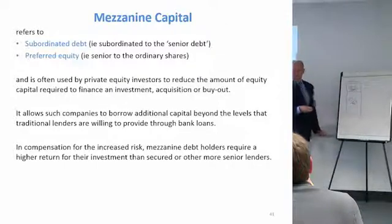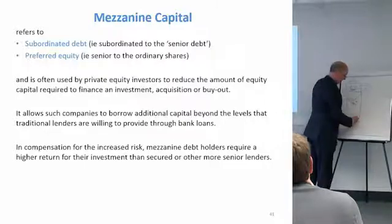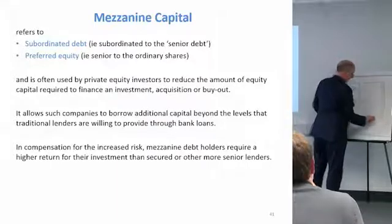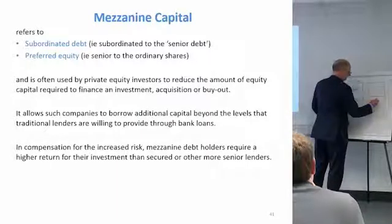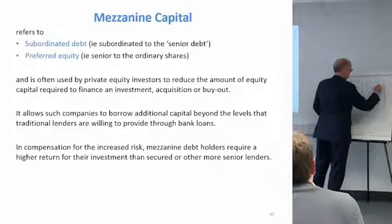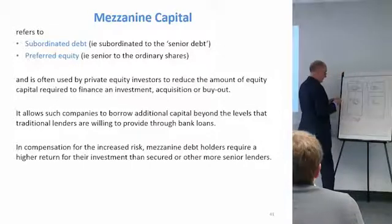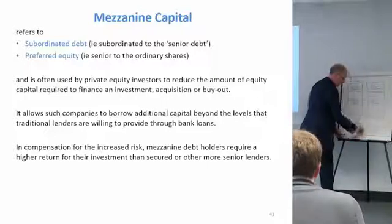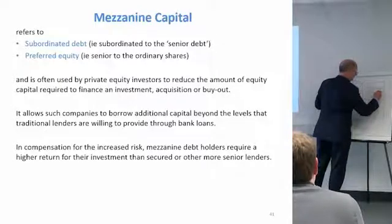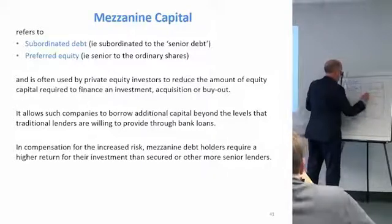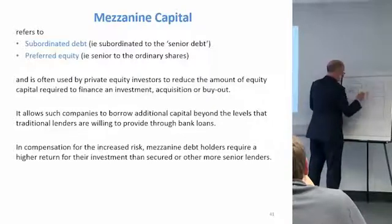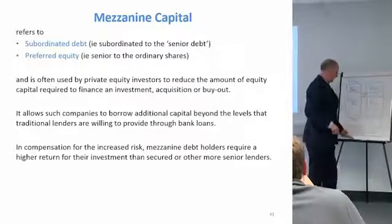The leverage ratio, or loan-to-value, would be 75%. Now, because of the banking situation, the bank might only lend 60% — £6 million. If the equity investors still only have £2.5 million, there is £1.5 million missing. That £1.5 million would be provided by mezzanine investors — a combination of subordinated debt, or junior debt, and preferred equity.